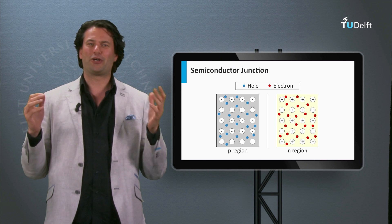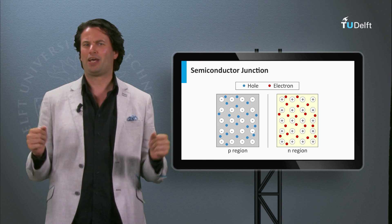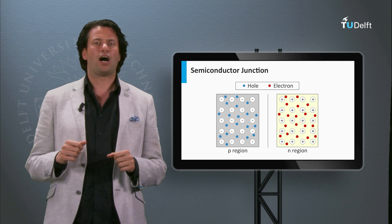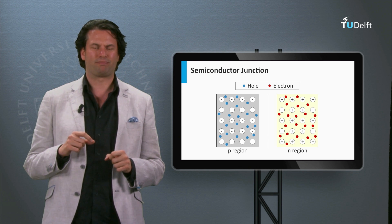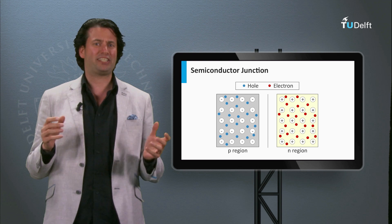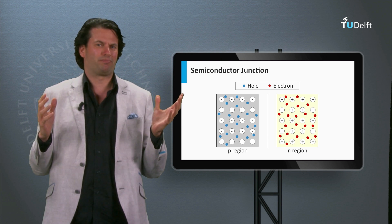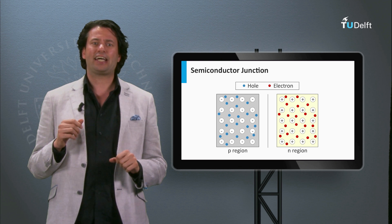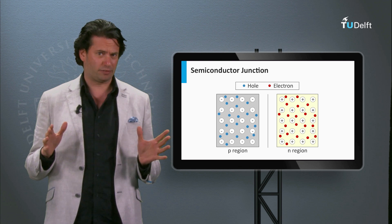Finally, we are going to build a solar cell. Most solar cells are based on a p-n junction. The question is, what is a p-n junction? Again, we take as an example the case for silicon.